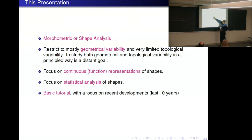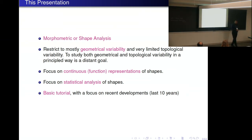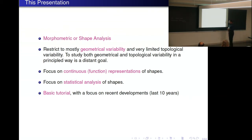I'm going to restrict mostly to the geometrical side of shapes — there is of course topological variability, and hopefully somebody like Saiyan can talk about topological data analysis and how those tools apply to shapes. When we talk about shapes, there are many different mathematical representations.